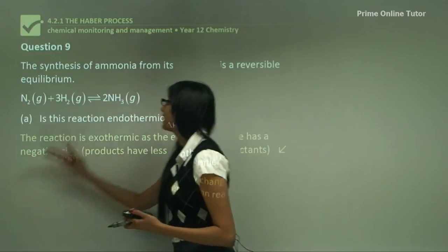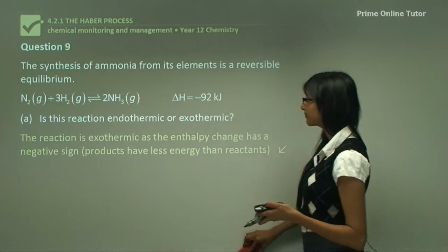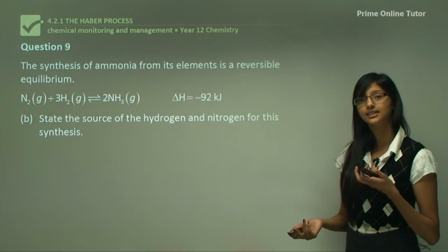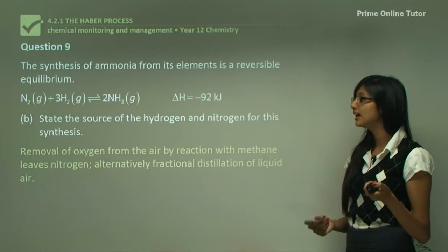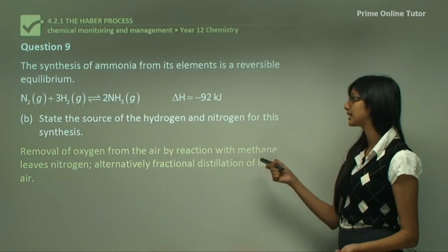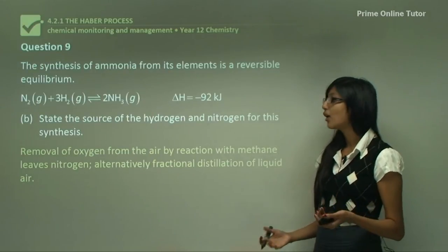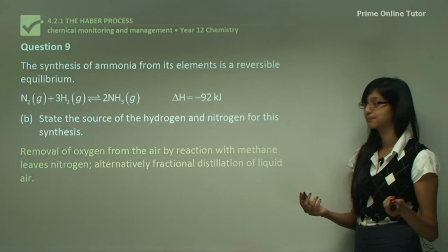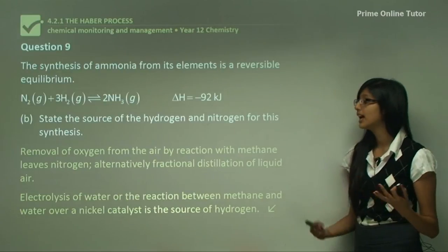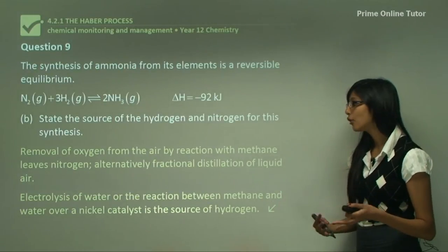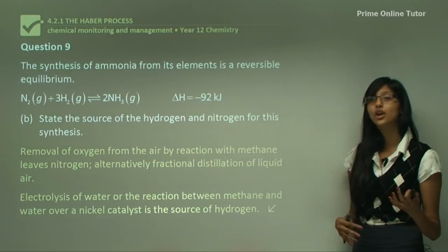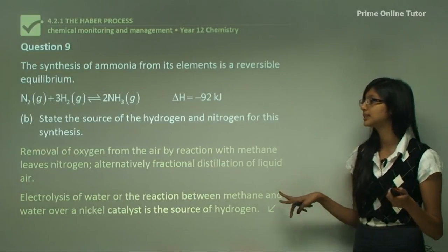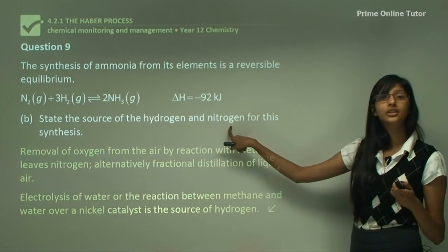Question 9b asks for the source of hydrogen and nitrogen used in this synthesis. Nitrogen is obtained by the removal of oxygen from air by reaction with methane, leaving nitrogen behind. Alternatively, fractional distillation of liquid air can be used. Hydrogen is obtained by electrolysis of water, or by the reaction between methane and water over a nickel catalyst.